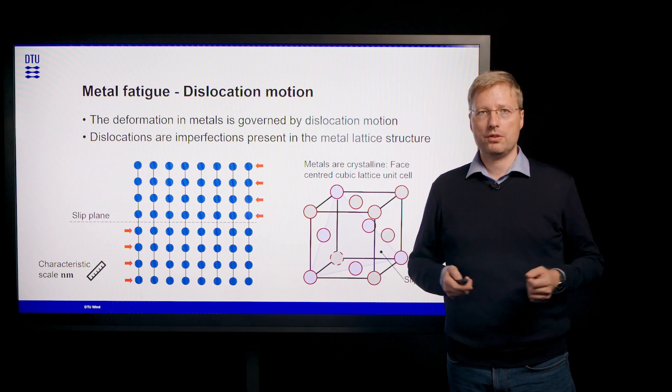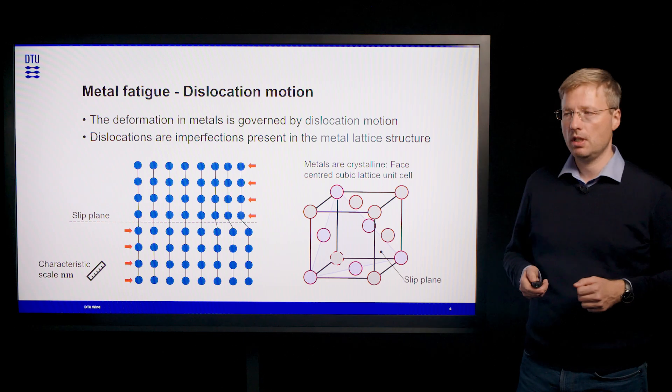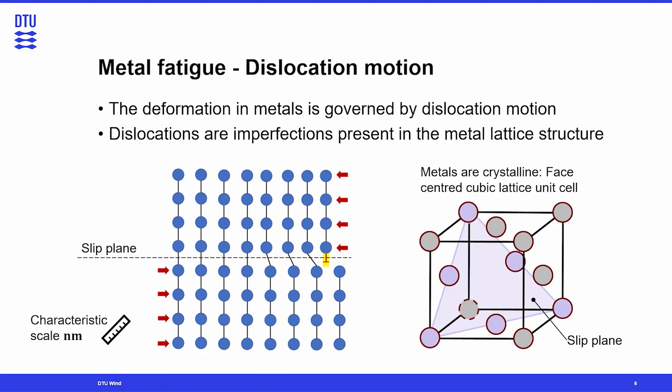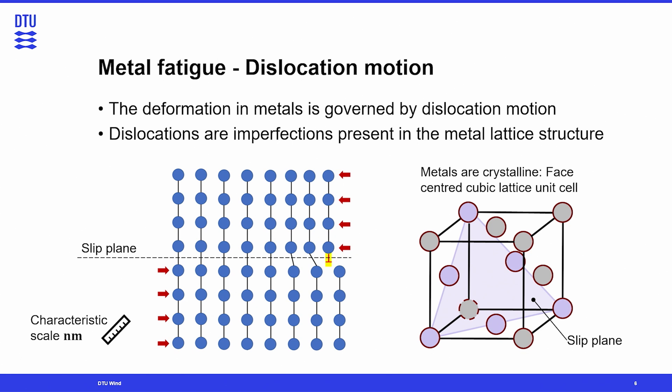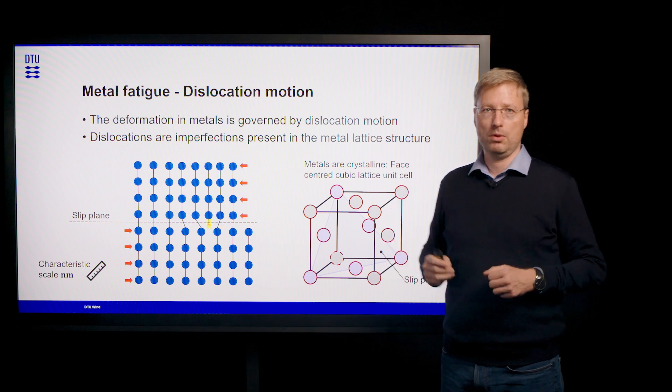Now if we start to look at metal fatigue, we need to ask ourselves what drives the deformation of a metal. And in order to answer that question, we have to observe that metals are special because they are crystalline. And crystalline means that the atoms making the material are arranged in a very strict repetitive pattern. And we can actually see them as an array or sum of different unit cells stacked on top of one another.